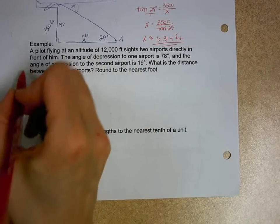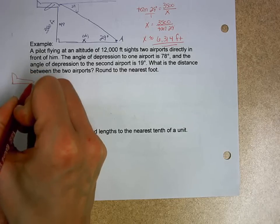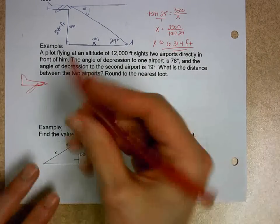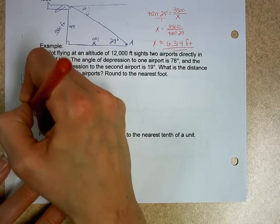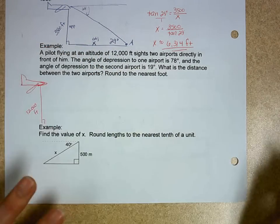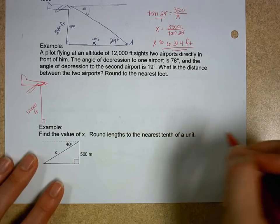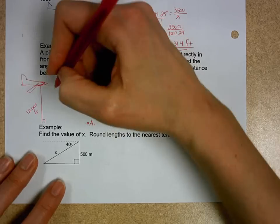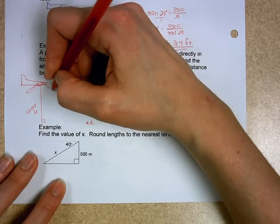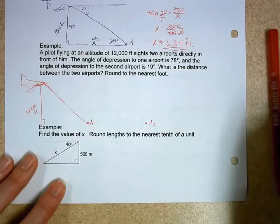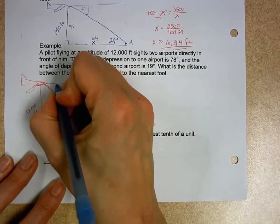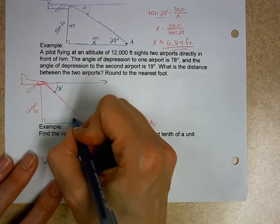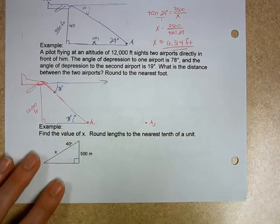A pilot is flying at an altitude of 12,000 feet. The angle of depression to one airport is 78 degrees. So here's airport 1, and over here is airport 2. Depression means that he had to look out horizontally first and then down. That's 78 degrees. But what do I know about my angle of elevation? 78 degrees. So don't forget that.